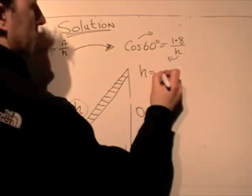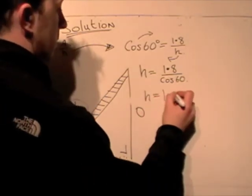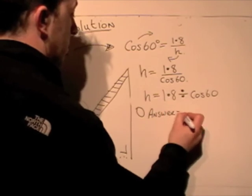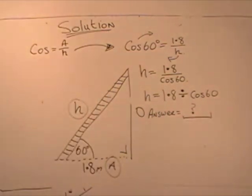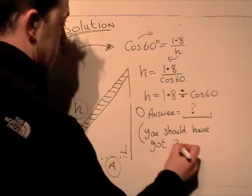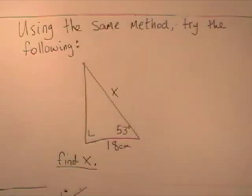This time it's a letter on the bottom of the fraction, and instead of bringing the h over and multiplying it by cos, we swap cos 60 with the h, so that hypotenuse is equal to 1.8 over cosine 60, or 1.8 divided by cosine 60. Work that out on your calculators, take the question down and fill it in, and your answer should be 3.6.